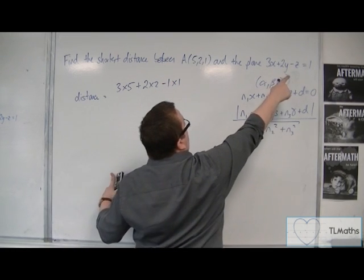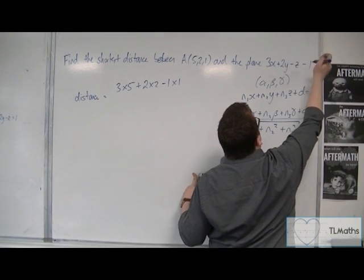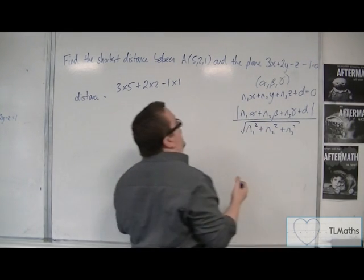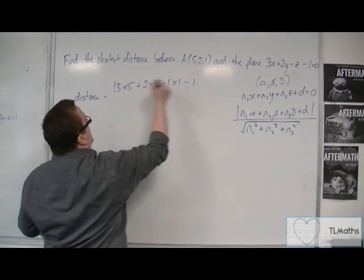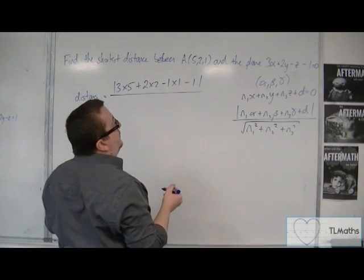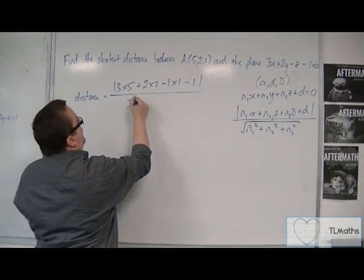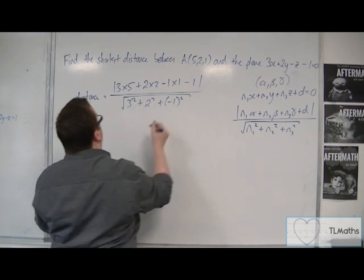and then we've got plus d. Now, we've got it in that form, so if you take 1 from both sides, then you can write it in the form that they want. So, we've got this minus 1 on the end. You want the modulus of that. All over n1 squared, so 3 squared plus 2 squared plus minus 1 squared square rooted.